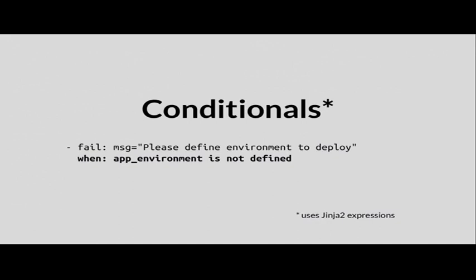Conditionals can be applied on any task — it's just an extra line saying 'when' and then an expression. The expression uses Jinja2, so you have the full power of Jinja2 for free. In this case, when we deploy something, we need to know what environment we're deploying to. We force a failure if the app environment is not defined.